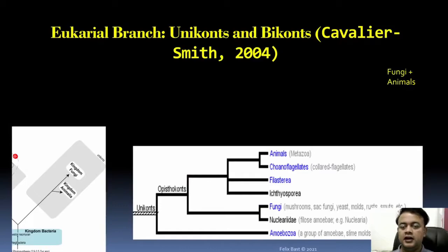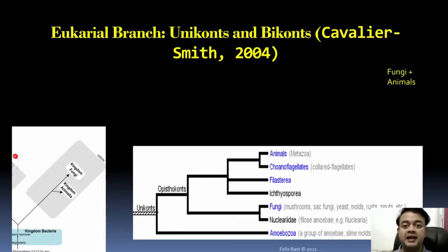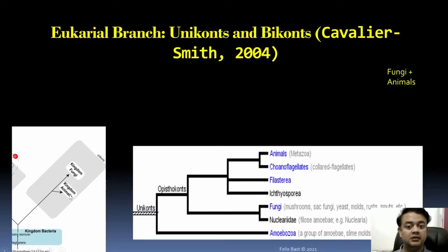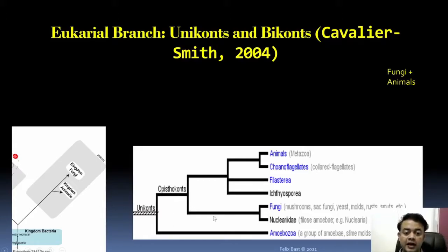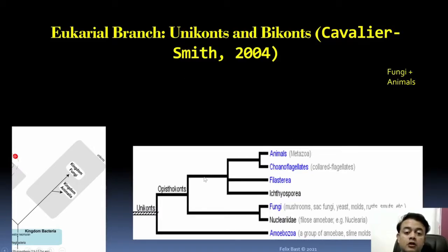The eukaryal branch has Unikonts and Ikonts. Cavalier-Smith influenced these terms in 2004. Unikonts include the classical animals and fungi, as well as related groups like choanoflagellates and nucleariids. There are two kingdoms within Unikonts: Kingdom Fungi and Kingdom Animalia as per Cavalier-Smith. The two major groups of Unikonts are Opisthokonta and Amoebozoa. Opisthokonta is a group that brings animals and fungi together.